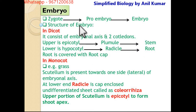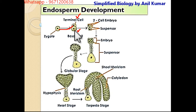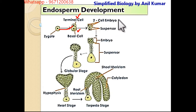Now, what is an embryo? The male gamete is fused with the female gamete — 1N and 1N — to form the zygote, which is 2N. The zygote is then divided into 2 cells: the upper one is the terminal cell and the lower one is the basal cell. The basal cell is further divided, and the terminal cell also divides to form the 2-cell stage.